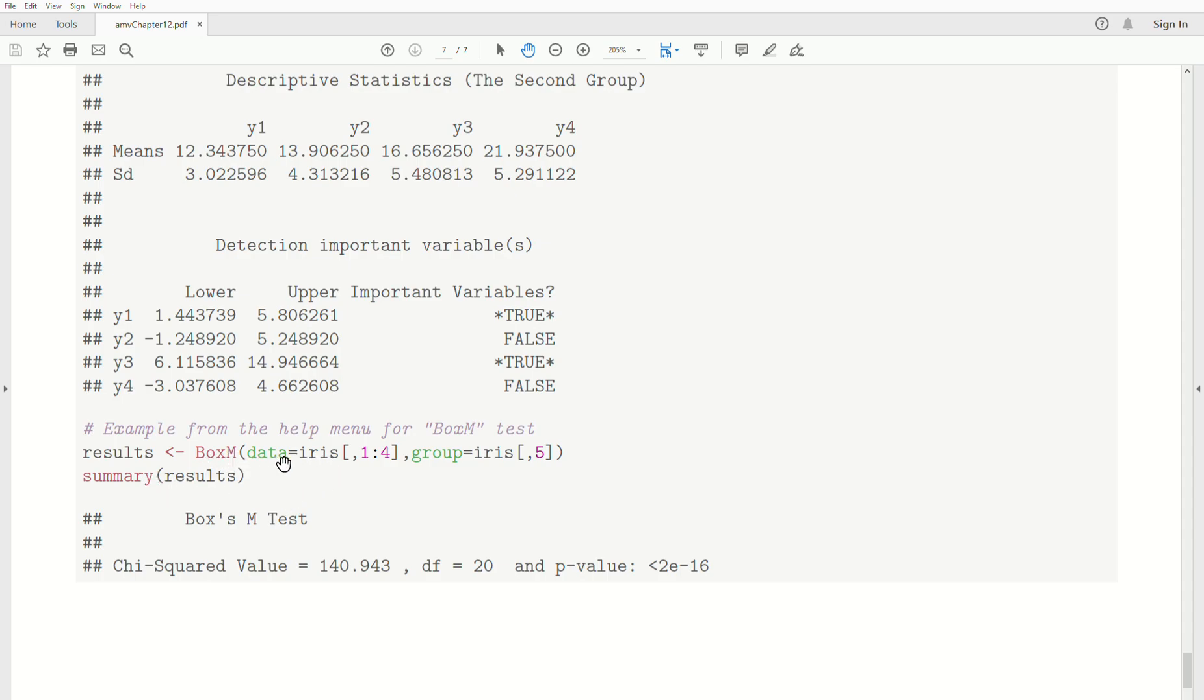And so you just BoxM test on the data. Here's the group assignment. And it's highly significant, which says that the covariance matrices between those groups are not the same. They are statistically different.